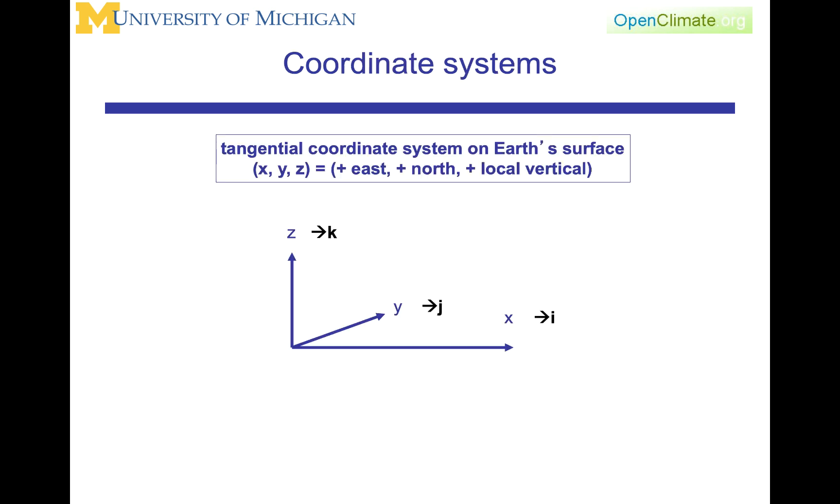The coordinate system that we will use to develop the expressions for the different forces will be a Cartesian coordinate system that's sitting at a point on the Earth and is tangent to the Earth. The x direction will be positive from west to east, the y direction will be positive from south to north, and the vertical will be the local vertical as you look directly above you. We will, for the most part, assume that the Earth is a perfect sphere.